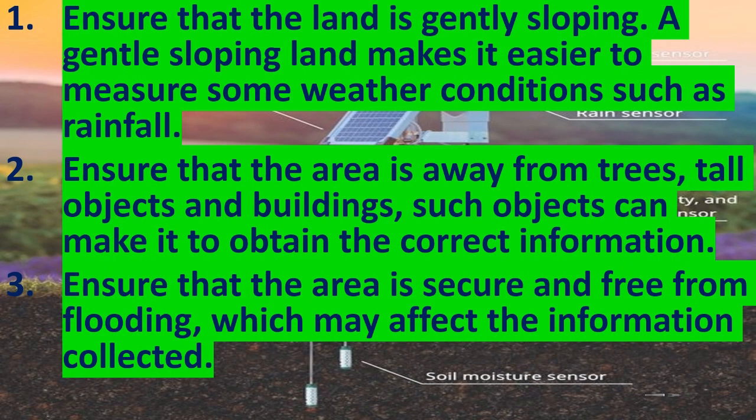A gently sloping land makes it easier to measure some weather conditions, such as rainfall. Also ensure that the area is away from trees, tall objects, and buildings, as such objects can make it difficult to obtain correct information.